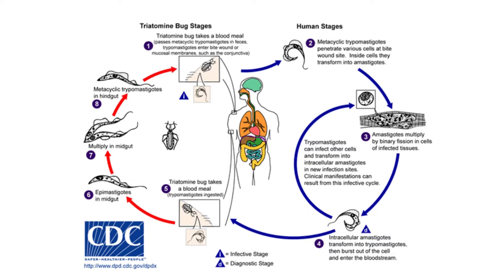In the first step, the insect vector, Reduviidae, takes a blood meal from either humans or armadillos and releases tripomastigotes in its feces near the bite. The tripomastigotes enter through the wound or nearby mucosal membrane. In the second step, the tripomastigotes then invade intracellularly within the adjacent tissue. Once inside, the tripomastigotes transform into amastigotes, which multiply by binary fission. Eventually, amastigotes differentiate back into tripomastigotes and are released into the bloodstream, leading to invasion of new sites via hematogenous spread.